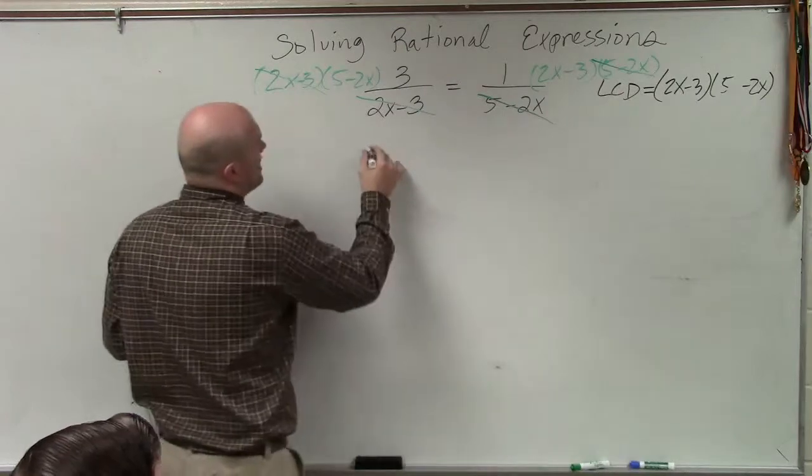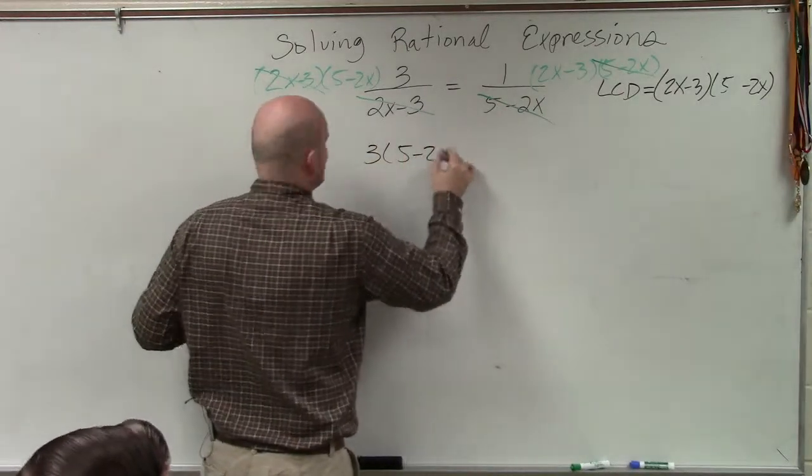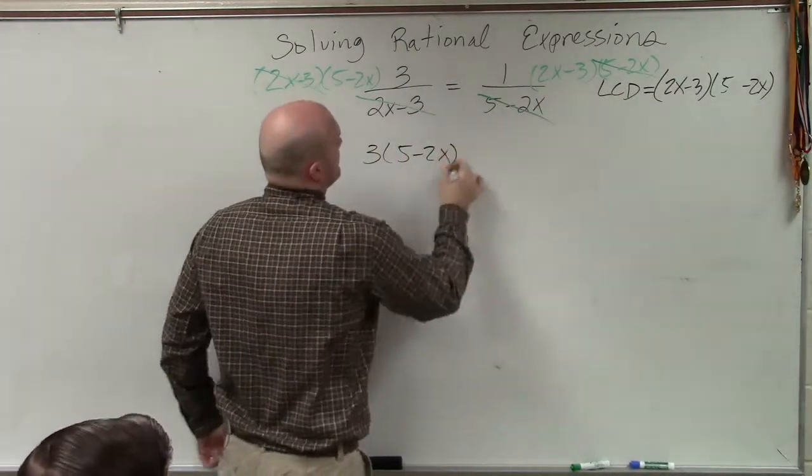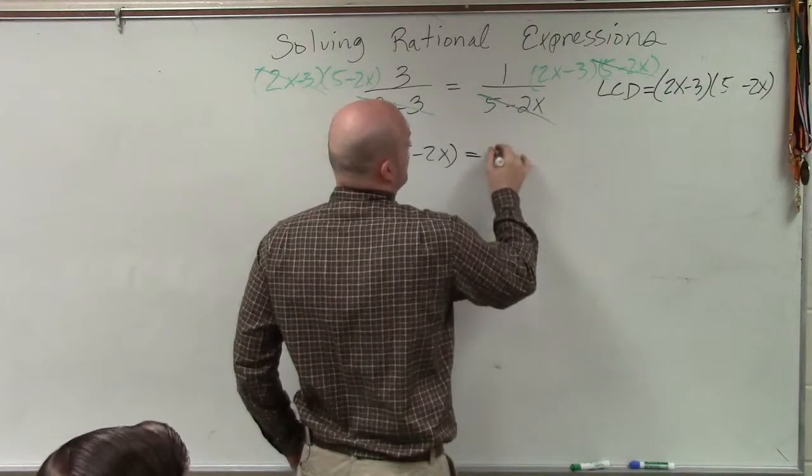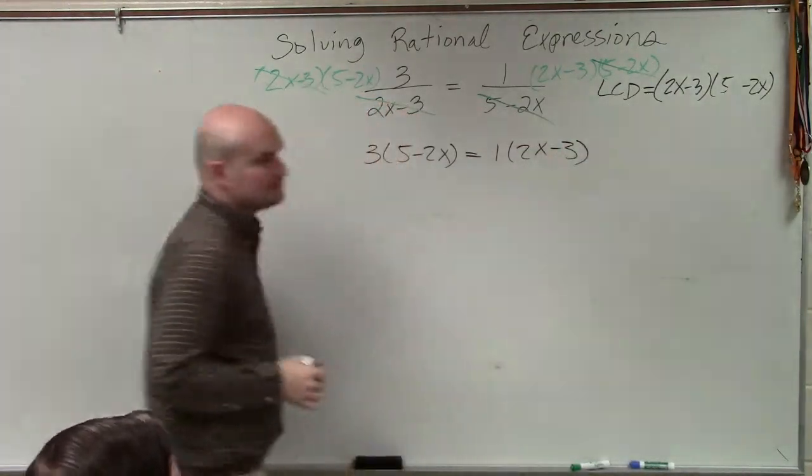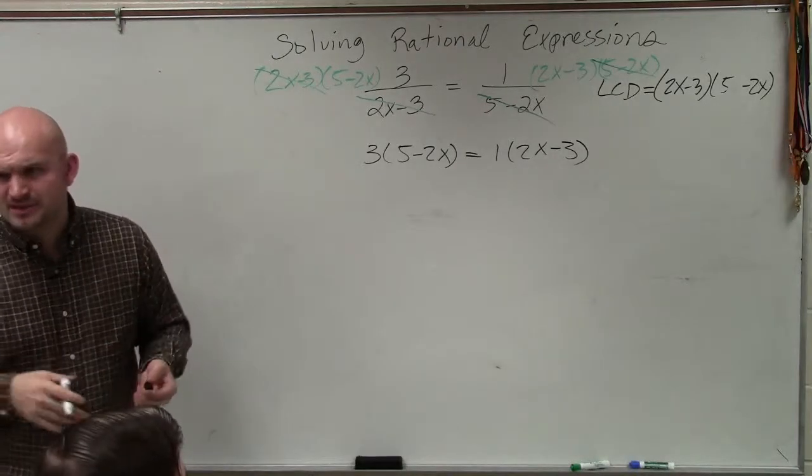So therefore, I have 3 times 5 minus 2x equals 1 times 2x minus 3. Well, 1 times anything is just going to be the same, right?